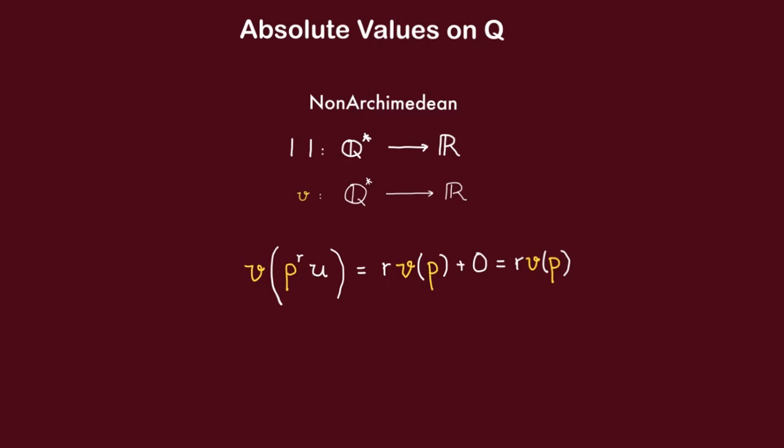So given any rational number, non-zero rational number, we can decompose it into a product of a part with P to powers and then a part that is prime to P. Then the valuation of this element is just going to be r times V of P. So the valuation must be uniquely determined by the value of V of P. So let us call that alpha.